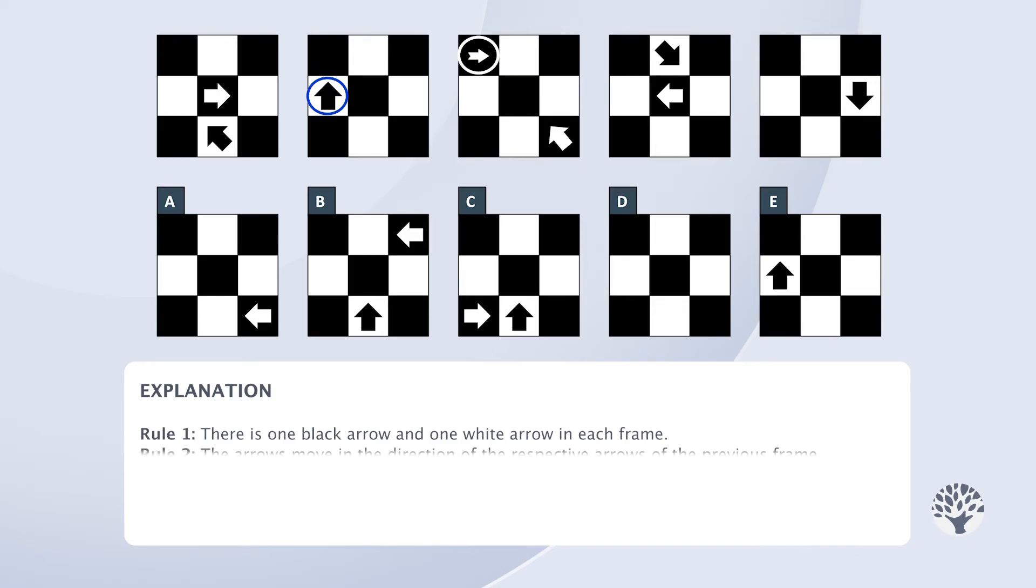The second rule is that the arrows move in the direction in which they're pointing in the previous frame. And the third rule is that when an arrow and the background square are the same colour the arrow's not visible.